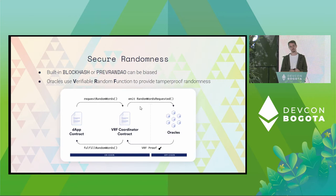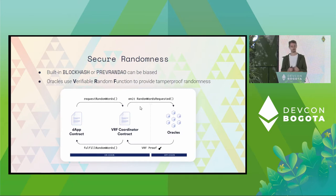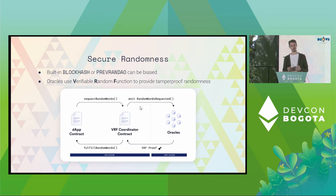On-chain, there's no native capability to get good randomness. This is where oracles come in and can provide that functionality. We have a cryptographic construct called a verifiable random function, which enables an oracle to provide tamper-proof randomness.